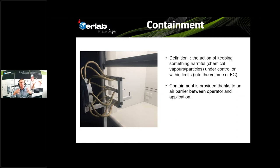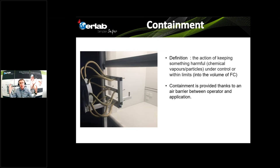When you use a ducted fume hood, all the air used to create this air barrier is extracted from the building's air volume, thanks to the fan. With a recirculatory fume cupboard, the air is not extracted from the building — it is filtered through the filters before being recycled into the room.